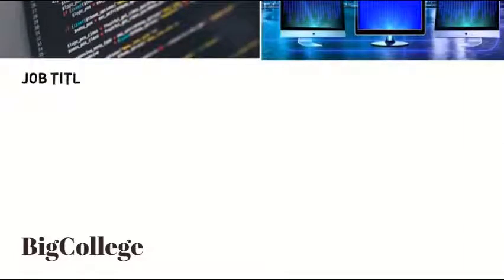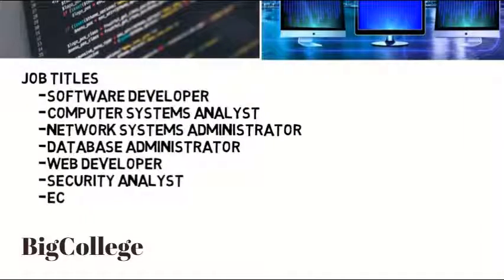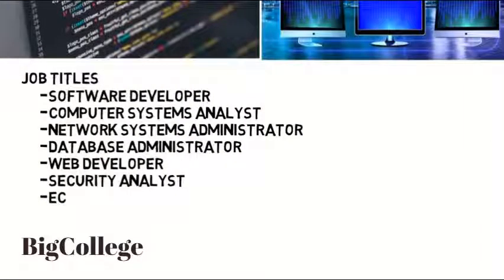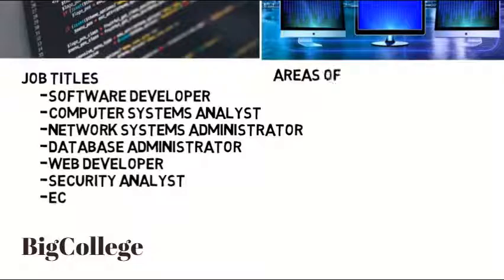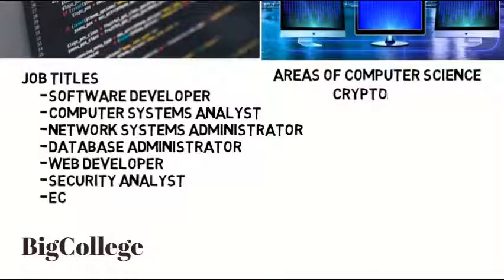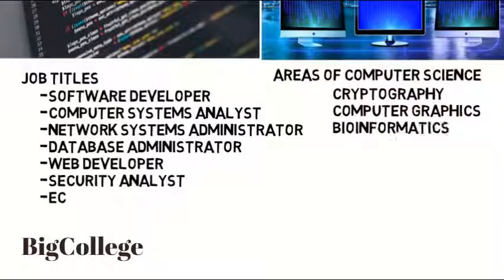As a computer scientist there are many specific job titles you can acquire, including software developer, computer systems analyst, network systems administrator, database administrator, web developer, and security analyst. There are more, but I'm going to focus on these and then I will go into areas of computer science like cryptography, computer graphics, bioinformatics, and more.